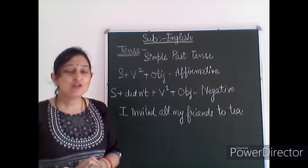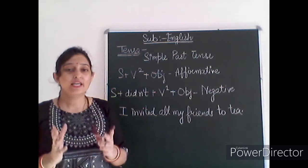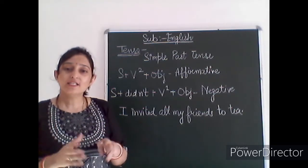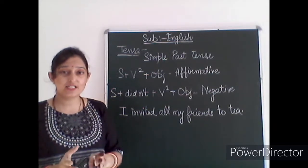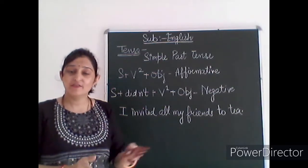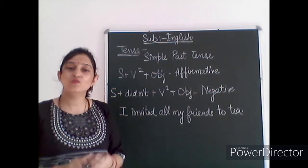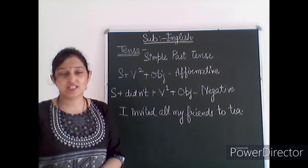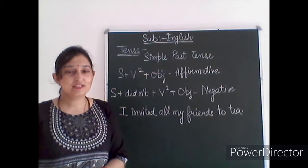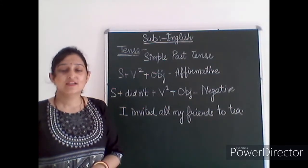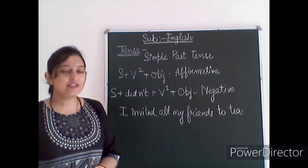First of all, I would like to revise all four forms of each tense. Tenses are further divided into three main types: present tense, past, and future. These three main types are further divided into four main categories: simple, continuous, perfect, and perfect continuous.